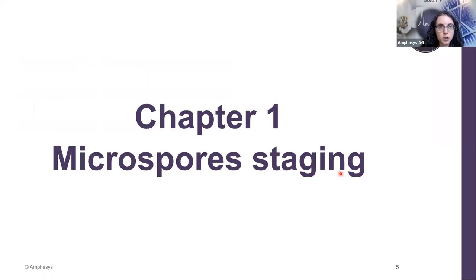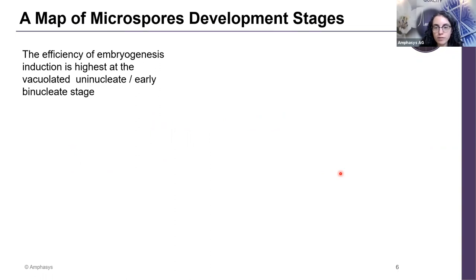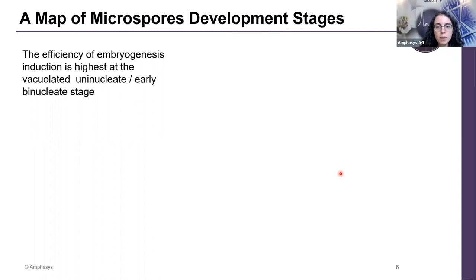Let's start with chapter one. As mentioned, the application of stress at the beginning of the process is very important — it's fundamental to switch from the gametophytic pathway to embryogenesis. However, one of the critical factors in the success of that switch is the developmental stage of the microspore at the time of stress application. The microspore needs to be at the intermediate-to-late uninucleate phase or early binucleate in order for the switch to occur. Therefore, it makes sense to start the culture with the highest proportion possible of microspores that are able to perform that switch and lead to embryos.